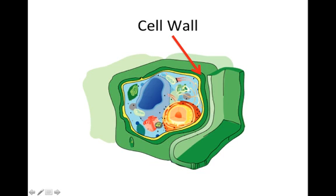The cell wall is found in plant cells and some other types of cells, but usually not in animal cells. The cell wall is on the outside of the cell membrane, and it helps give shape and support to the cell. Since plants fluctuate more in the amount of water inside them, this keeps it from stretching or shrinking too much and holds its shape. The cell wall is made out of larger carbohydrates such as cellulose and pectin.